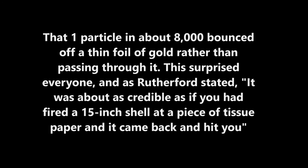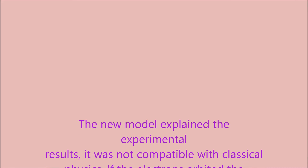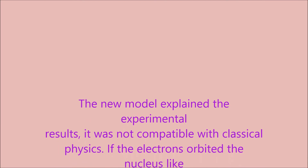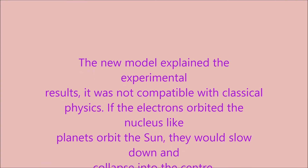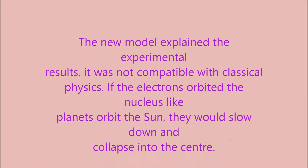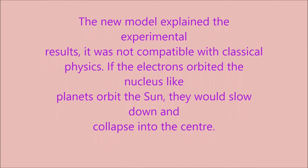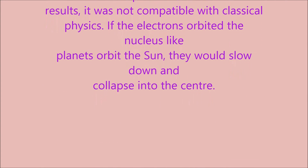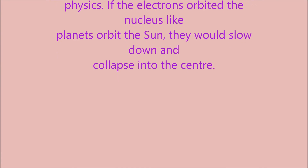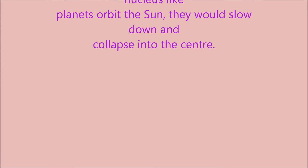Although the new model explained the experimental results, it was not compatible with classical physics. If the electrons orbited the nucleus like planets orbit the sun, they would slow down and collapse into the centre.